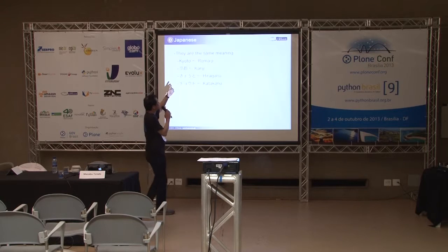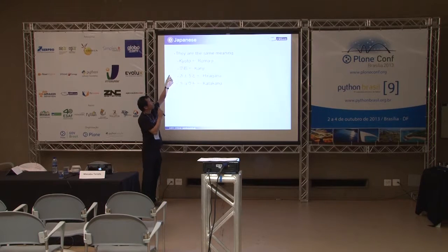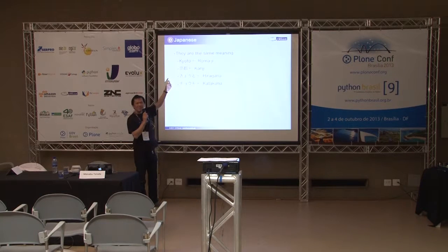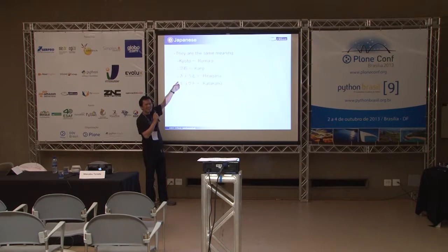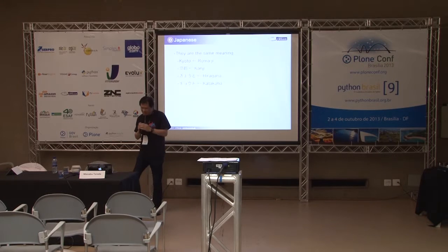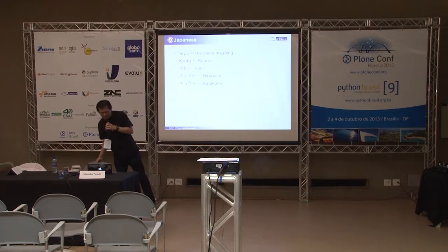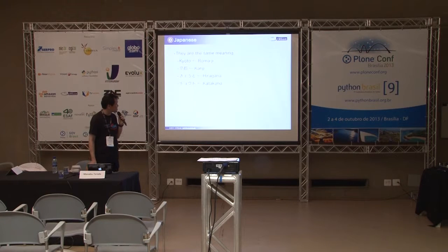They have the same meanings. For example, Kyoto — you know Kyoto? Beautiful city in Japan. This is kanji Kyoto, hiragana Kyoto, katakana Kyoto. Same word, same reading. We have four character types, and of course we can read all of them.